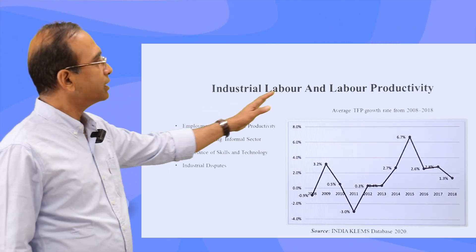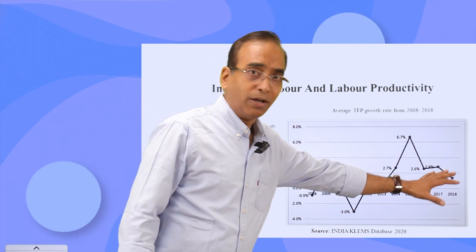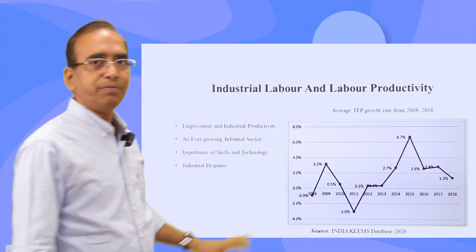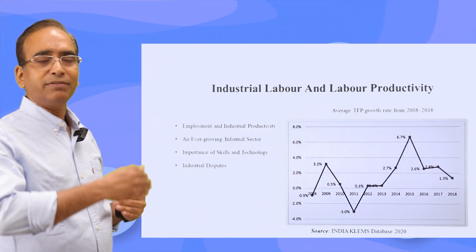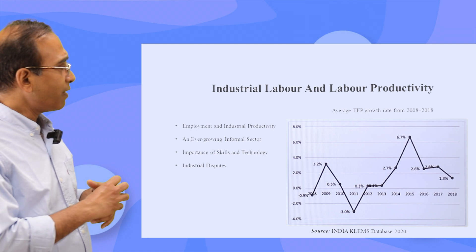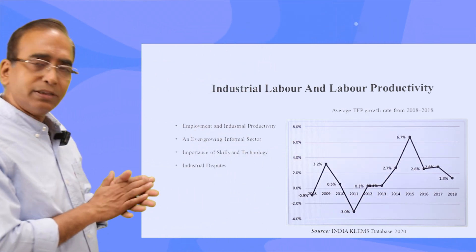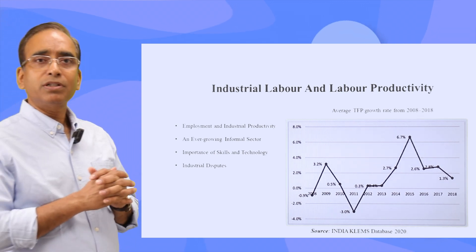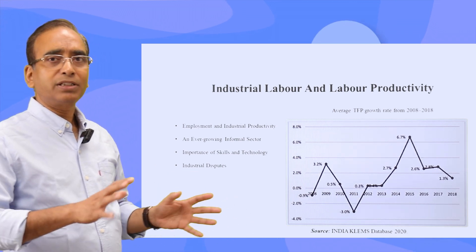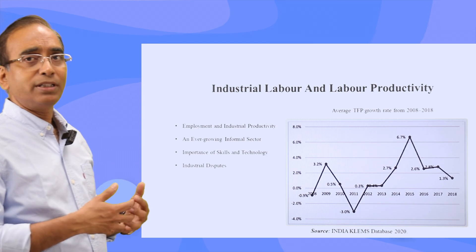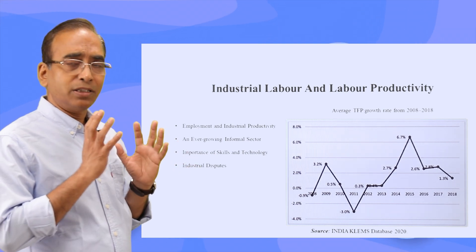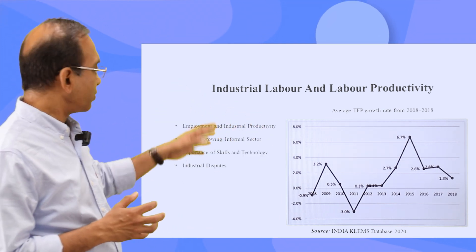Now let's come to labor productivity. Labor productivity has increased but is going down currently. More importantly, TFP — total factor productivity — is also going down. TFP is what remains after eliminating labor productivity and capital productivity. This declining TFP means India needs a lot of focus on skill development. India has large-scale unskilled and semi-skilled workers, and reskilling them with modern technology is a very important issue. The strategy for improving productivity must focus on skills.